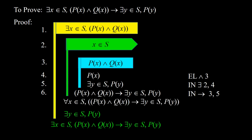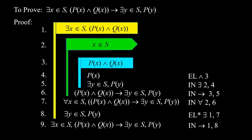Now we have for all x element of s, px and qx implies for some y element of s, py, indicated with 7. Then we get for some y element of s, py, by applying the alternative elimination of the existential quantifier to 1 and 7, indicated with 8. Finally we arrive at our destination — what we wanted to prove — by applying the introduction of implication to 1 and 8. So we are done.